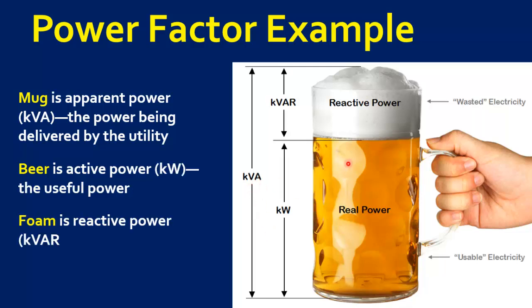which is the power being delivered by the utility. Beer represents active power or useful power KW, and the foam represents reactive power KVAR, which is the wasted power or lost power. Now here you see that for same mug, the lesser the foam appears at the top, the more beer can be accommodated in the mug.